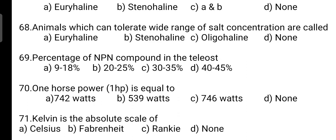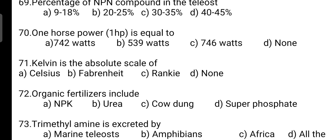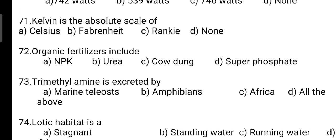Animals which can tolerate a wide range of salt concentration are called: correct answer is Option A — euryhaline. Percentage of NPN compound in a teleost: correct answer is Option A — it is 9 to 18%. One horsepower is equal to: correct answer is Option C — it is 746 watts. Kelvin is the absolute scale of: correct answer is Option A — it is Celsius.